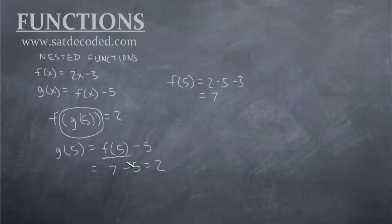But all we've solved so far is the inside portion. Notice how many levels or how many tiers and steps this question has. Now that we found out g(5) is equal to 2, we can replace the g(5) with a 2.